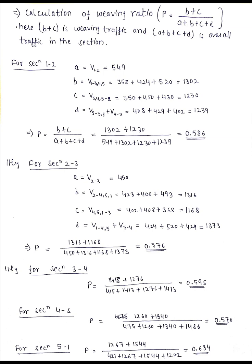I have elaborated in detail for section 1-2 and section 2-3, and for other sections I am not elaborated in detail because these are also the same. Now once we have the various values of weaving ratio for all the sections, we can choose the maximum one. Here maximum weaving ratio is 0.634, which is for section 5 and 1.